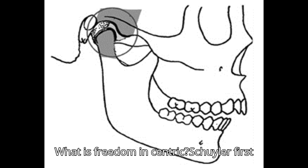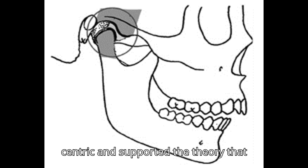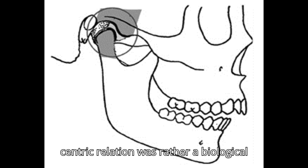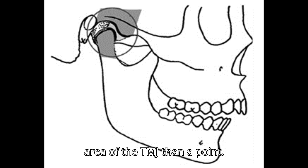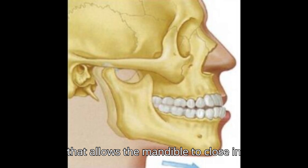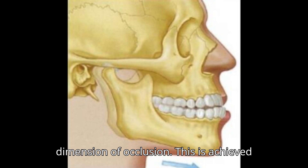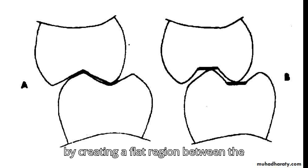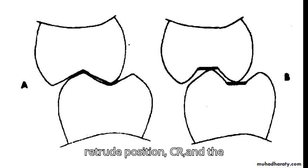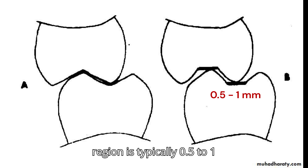What is freedom in centric? Schuyler first introduced the concept of freedom in centric and supported the theory that centric relation was rather a biological area of the TMJ than a point. Freedom in centric is an occlusal concept that allows the mandible to close in centric relation or slightly anterior to it without changing the vertical dimension of occlusion. This is achieved by creating a flat region between the retrusive position (CR) and the maximum intercuspation (MIC). This flat region is typically 0.5 to 1 mm long.